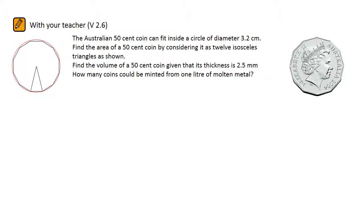Our first task is to find the area of a 50 cent coin by considering it as 12 isosceles triangles as shown. If the circle is of diameter 3.2 cm, then its radius will be the side of these isosceles triangles. It will be 1.6 cm.